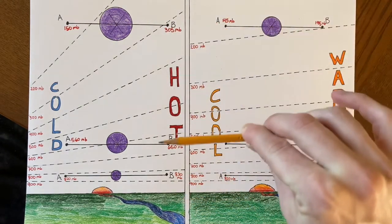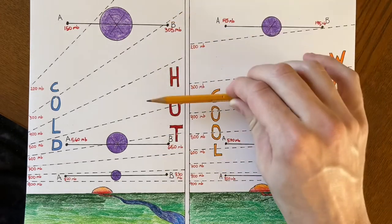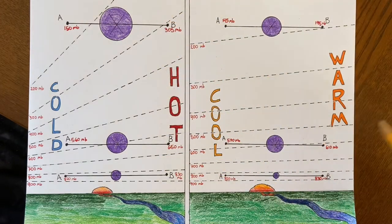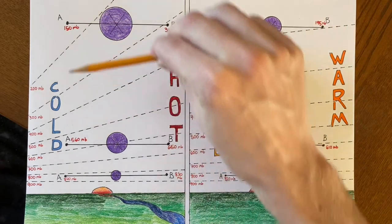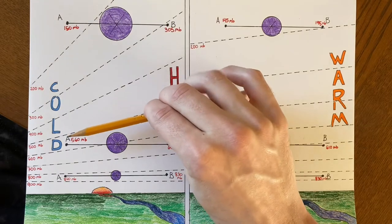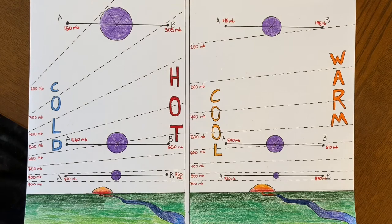It expands out vertically and actually the height of the whole atmosphere increases. And when an air mass is cooled, it shrinks down vertically. So these pressure levels, the spacing between them can change depending on whether that is a warm air mass or a cold air mass.